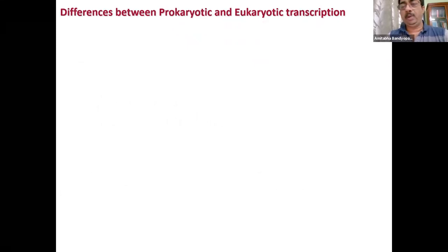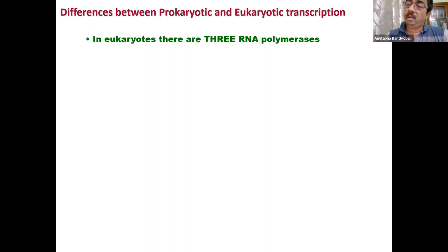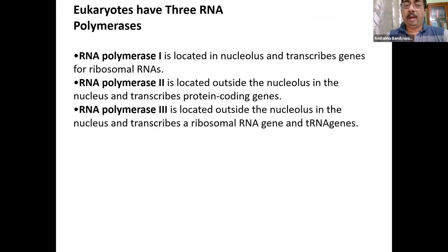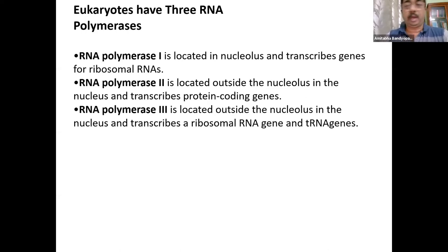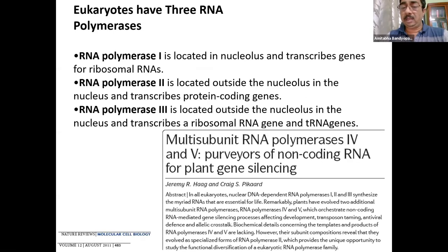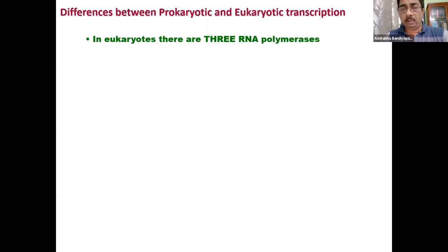What are the differences between prokaryotic and eukaryotic transcription? The differences are way too many. In eukaryotes there are 3 RNA polymerases. RNA polymerase 1 is located in the nucleolus and transcribes genes for ribosomal RNA. RNA polymerase 2 is located outside the nucleolus and transcribes protein-coding genes. RNA polymerase 3 is located in the nucleus outside the nucleolus and transcribes one ribosomal RNA gene and all the tRNAs. In plants, RNA polymerase 4 and 5 also exist.